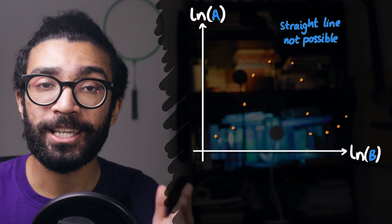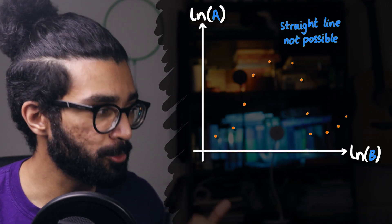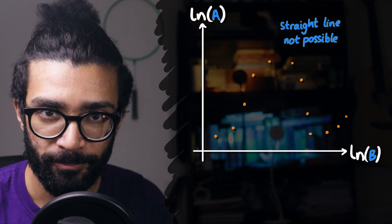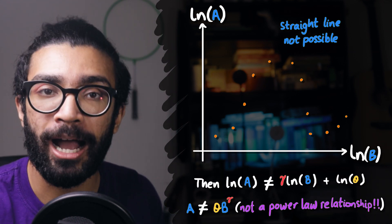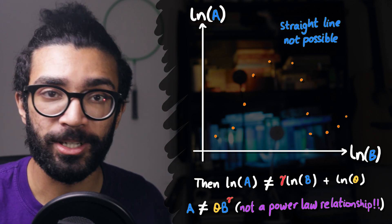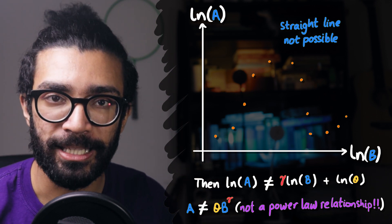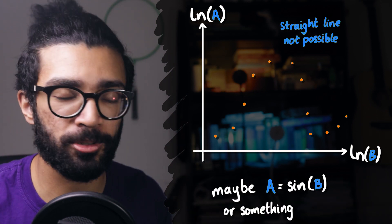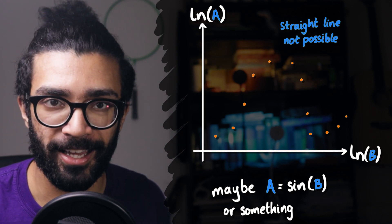And here's the other thing. If we cannot even plot a straight line after we've plotted ln A against ln B, then we know that it's not a power law relationship. In other words, A is not proportional to B to some power. It could be proportional to like sine of B or something like that.